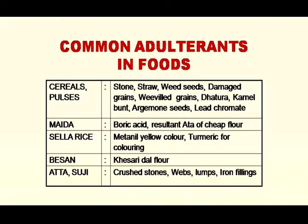In cereals and pulses, common adulterants include stones, straw, weed seeds, damaged grains, weevil grains, datura seeds, burnt kernels, argemone seeds, and lead chromate added for coloring purposes. In maida, boric acid is added. Resultant atta of cheap flour, parboiled rice (cellar rice), methylene yellow color, and turmeric powder are also added for coloring purposes.